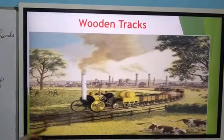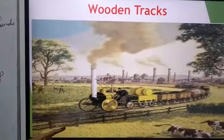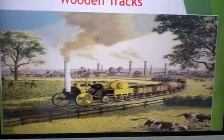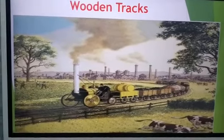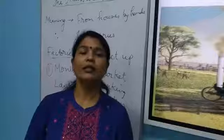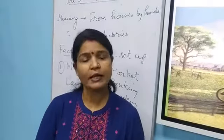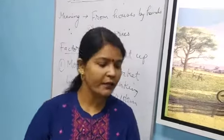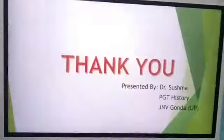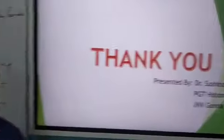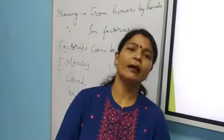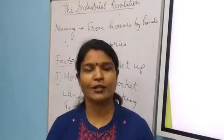You can see wooden tracks here — the train running on wooden tracks — whereas today we have iron tracks. This concludes the first part. In the next part, we will discuss how workers were working in factories, what was the condition of the workers and women, and what steps were taken by the government to improve their condition.